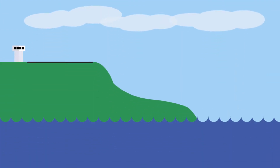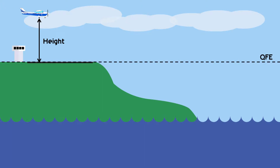Before we look into the procedure of using CRP5 to calculate true altitude, we will first look at altitude terminology that will be used throughout this video. Height is indicated on the altimeter when its subscale is set to QFE. Height is defined as the vertical distance above a selected ground level datum, usually your home airfield.